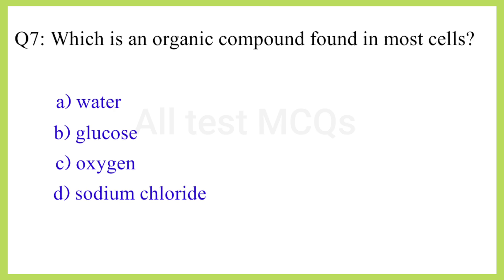Q7. Which is an organic compound found in most cells? The correct answer is option B: Glucose.